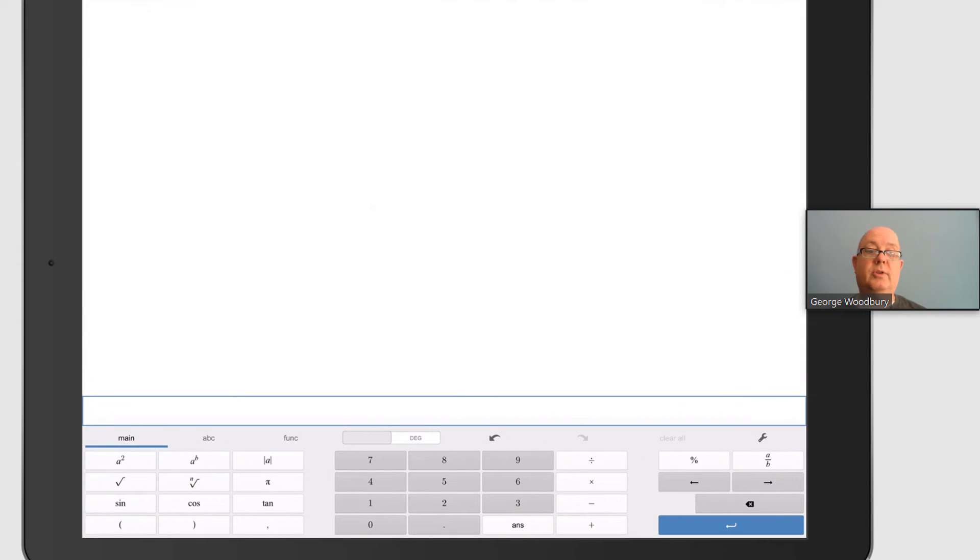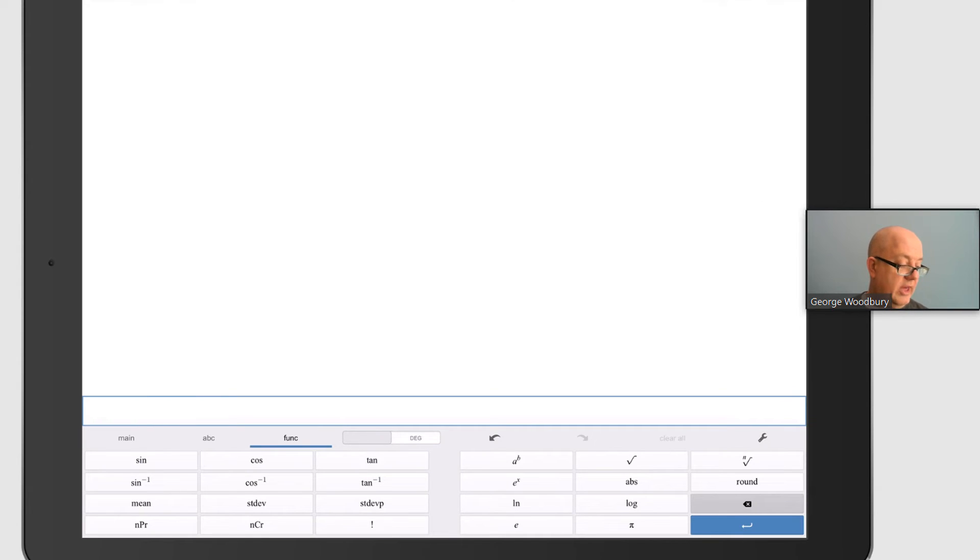Clear all this from the previous one. The natural logarithm is also under functions in the Desmos calculator listed as ln, right under e to the x on purpose.